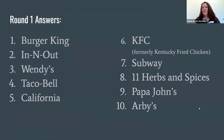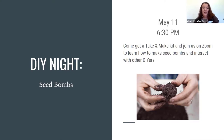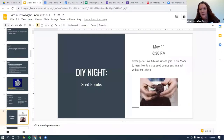After that 30 seconds is up I put up the answers. I don't reread the question as I read the answer because that gets long and tedious, but for unusual answers — like '11 herbs and spices' — I'll add context, reminding them that was the number Colonel Sanders put in his KFC original chicken recipe. Between every round I promote other library programs for two reasons: one, I always want to promote other things happening at the library, and two, it gives my scorekeeper a chance to catch up.